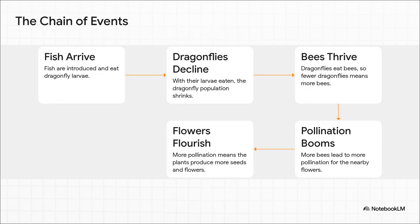Okay, get ready for this, because it's like a perfect chain reaction. Step one, the fish show up and start eating dragonfly larvae. That means fewer adult dragonflies hatch and fly around. Now, what do dragonflies love to eat? Bees. So with fewer dragonflies hunting them, the bee population just explodes. And what do more bees mean? A whole lot more pollination for all those flowers nearby. And more pollination means more seeds and, boom, more flowers.